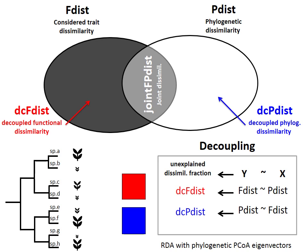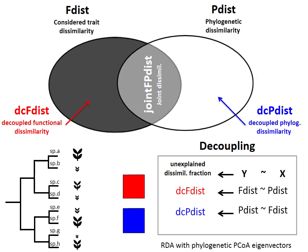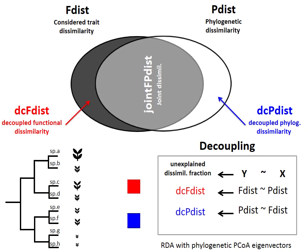Decoupled functional dissimilarity is shown here in red. Similarly, we also propose an approach to quantify the extent of phylogenetic distances independent from traits, which we call decoupled phylogenetic dissimilarity, shown here in blue. This decoupling is done first using the residuals of models in which functional distances are explained by phylogenetic distances, and second using a model in which phylogenetic distances are explained by functional distances. As detailed in our recent publication in Methods in Ecology and Evolution, this is done using redundancy analysis (RDA) combined with phylogenetic eigenvectors. Here we can see how the portion of decoupled dissimilarities becomes smaller when the overlap between traits and phylogeny increases.